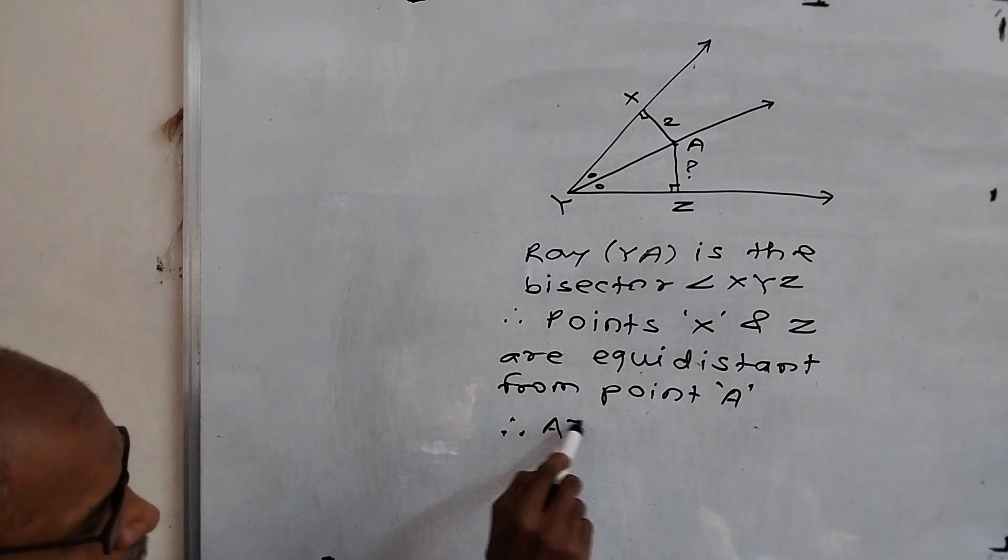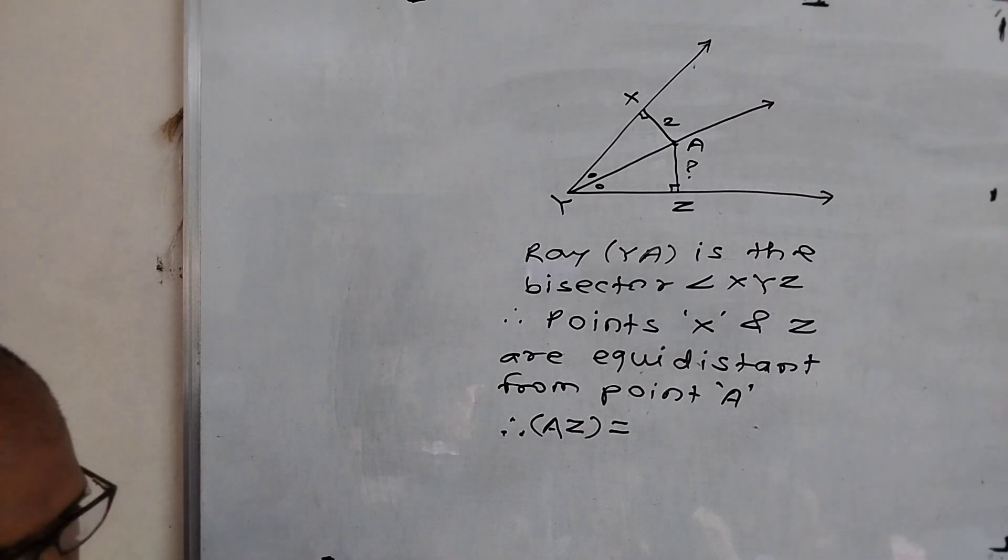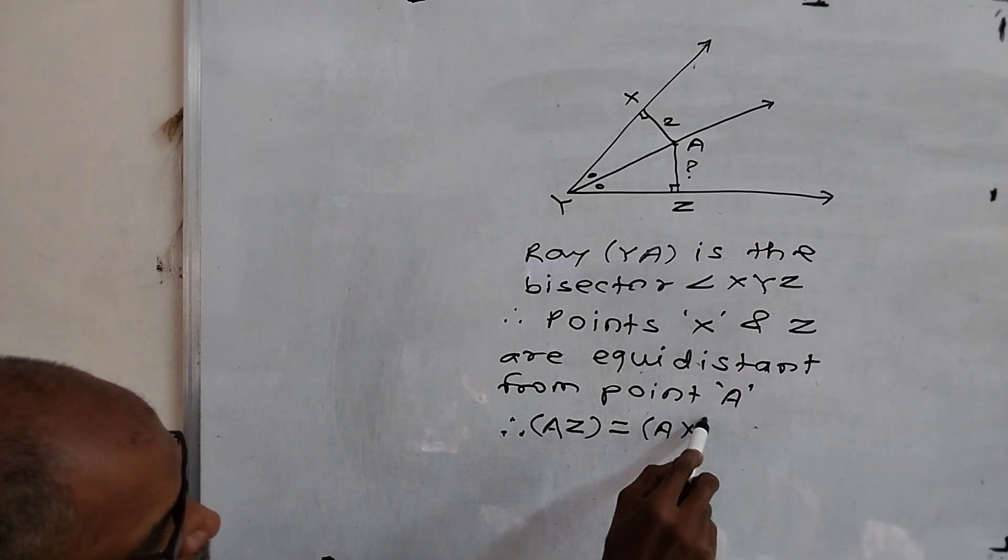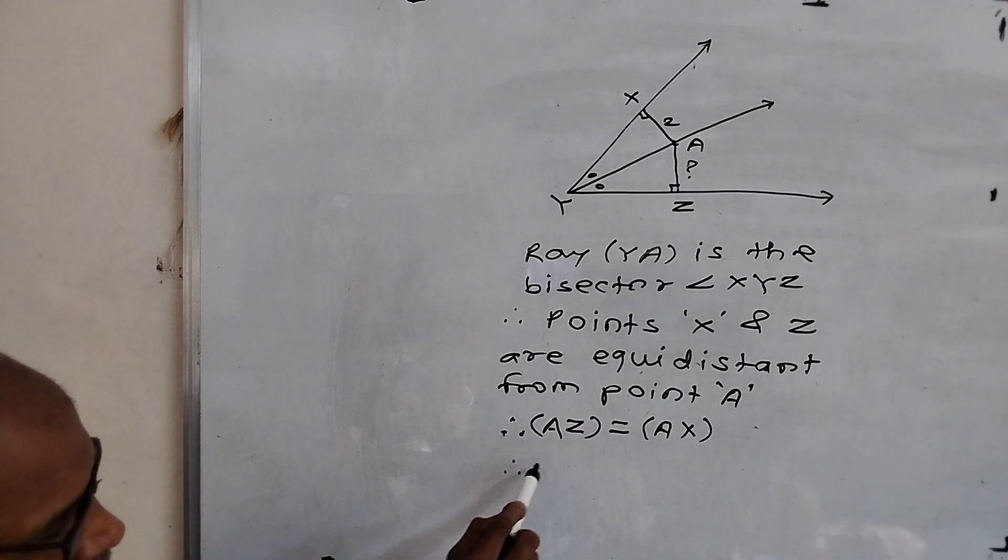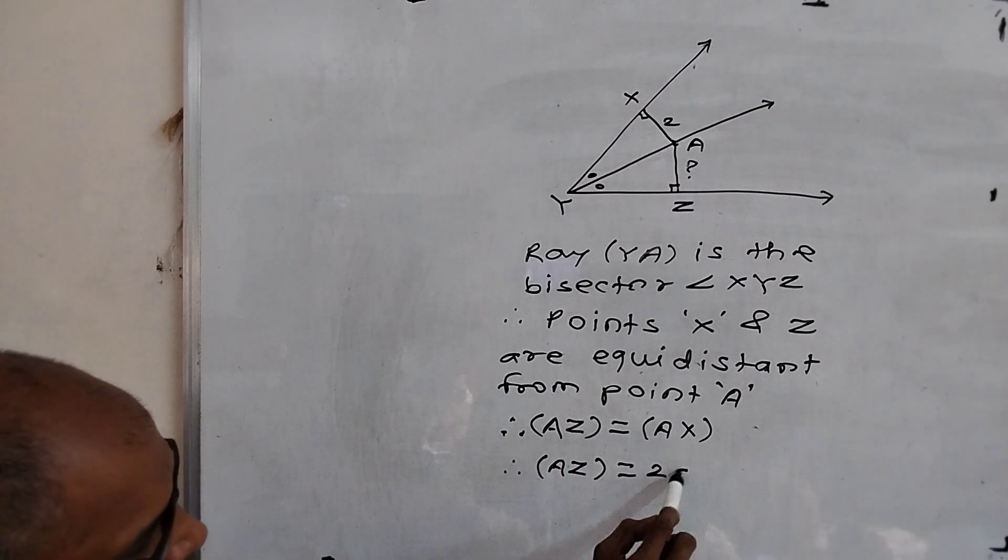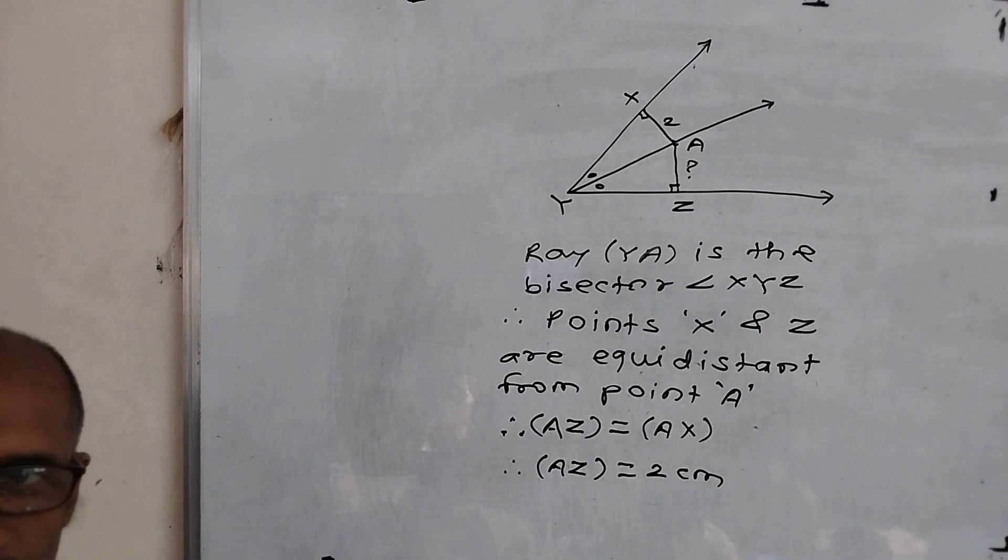Therefore, what is the meaning of equidistant? It means AZ is equal to AX. Therefore, AZ is equal to 2 cm. Did you understand?